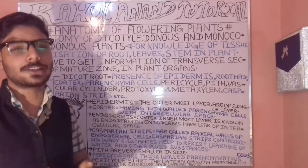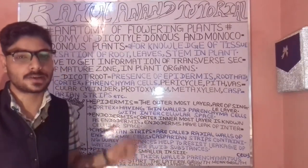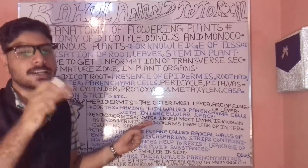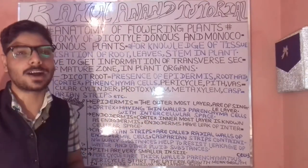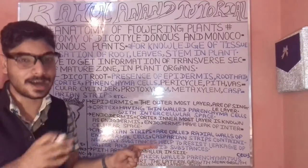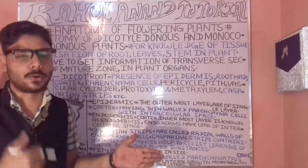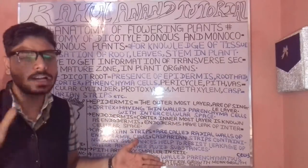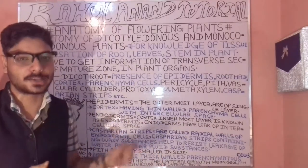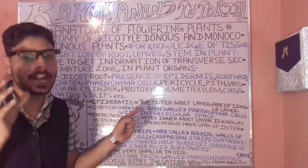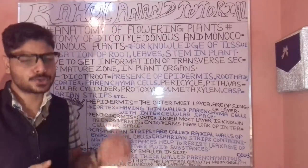Today we are going to study many terms of anatomy with reference to monocotyledonous as well as dicotyledonous plants, popularly known as monocot plants and dicot plants. To understand these, you need to get certain knowledge about tissue-level organization.